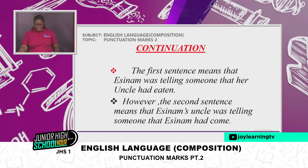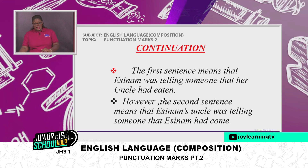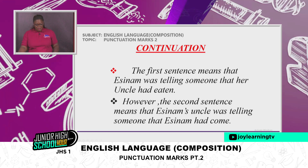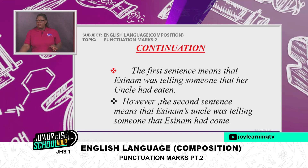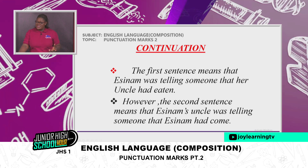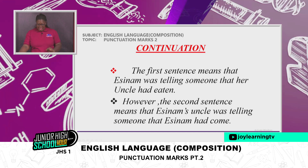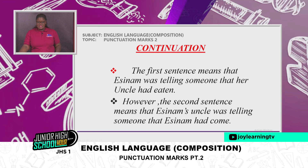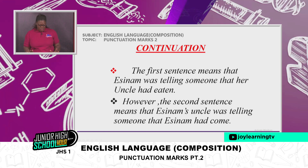The first sentence means that SNM was telling someone that her uncle had been eating. However, the second sentence means that SNM's uncle was telling someone that SNM had been eating. Now let's study the punctuation marks — we have the semicolon, quotation mark, hyphen, parenthesis, exclamation, and dash.